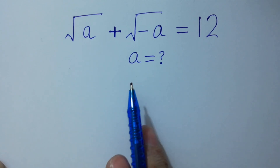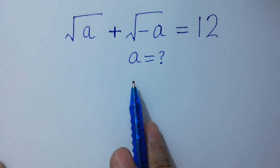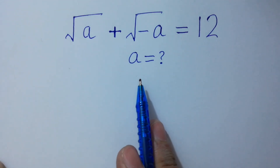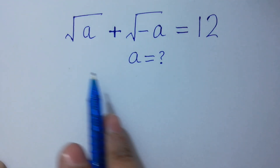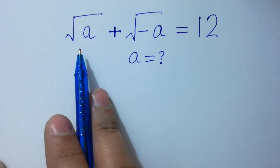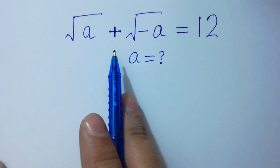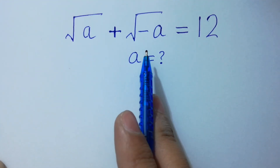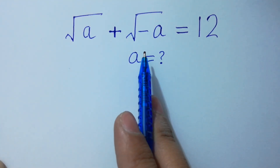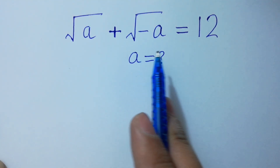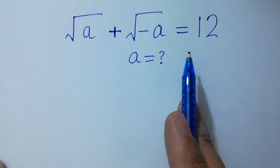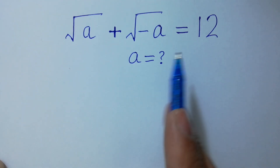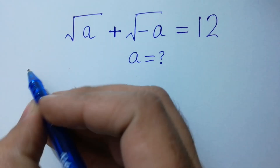Hello friends. Find the value of a if square root of a plus square root of minus a equals 12. Let's have a solution.